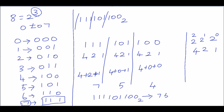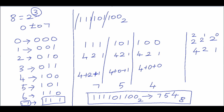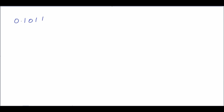So the binary number 111101100₂ can be written as 754₈. Next, we will see another example. The previous example did not have a fractional portion, so we will now see an example with a fractional portion: .1011₂.